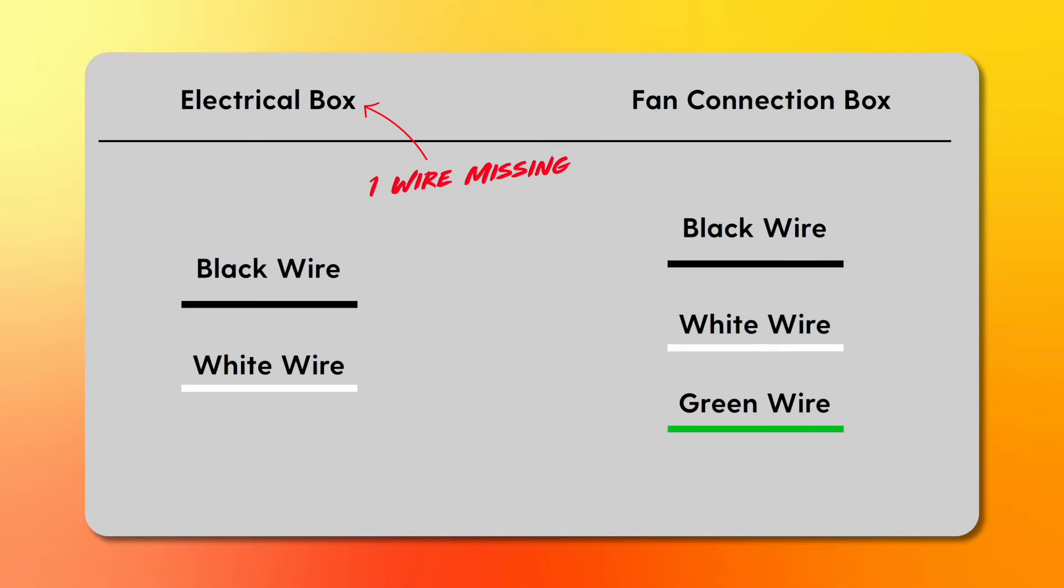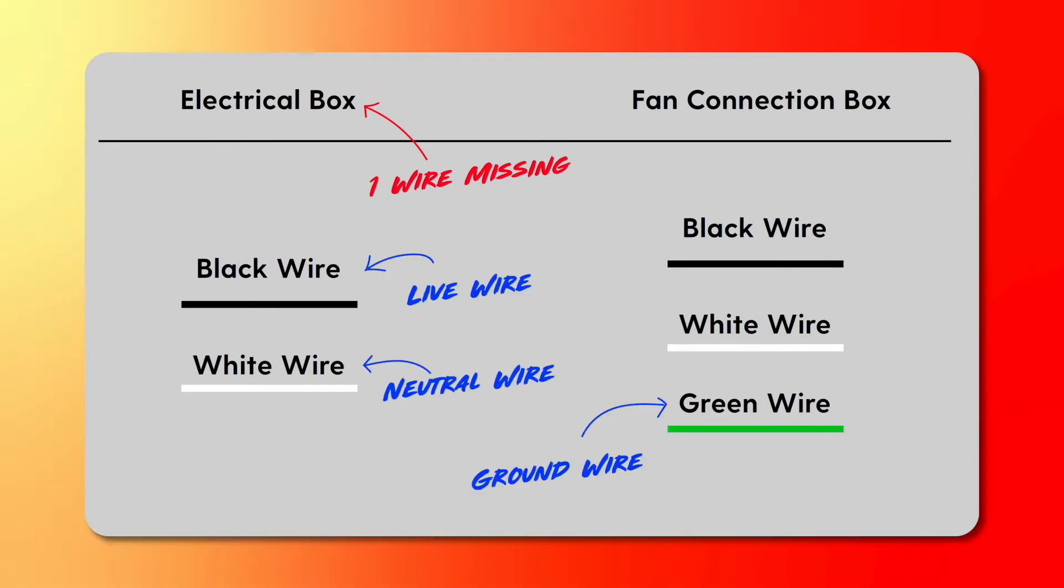The black wire which is coming from the electrical box is the live wire. The live wire is the wire in which the current is, the alternating current, the 120 volt.